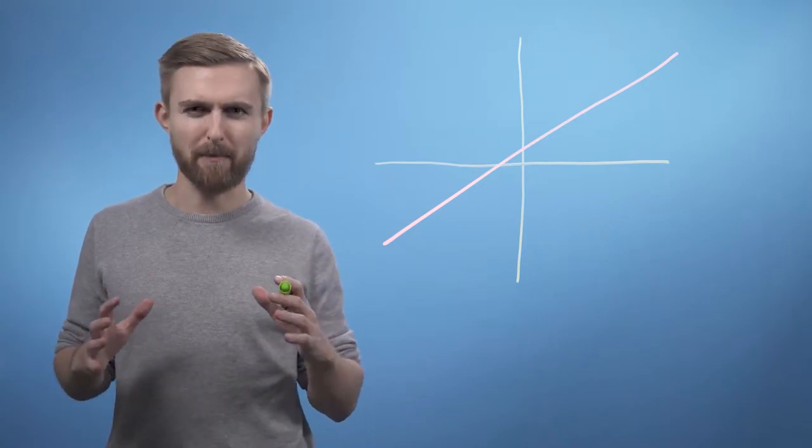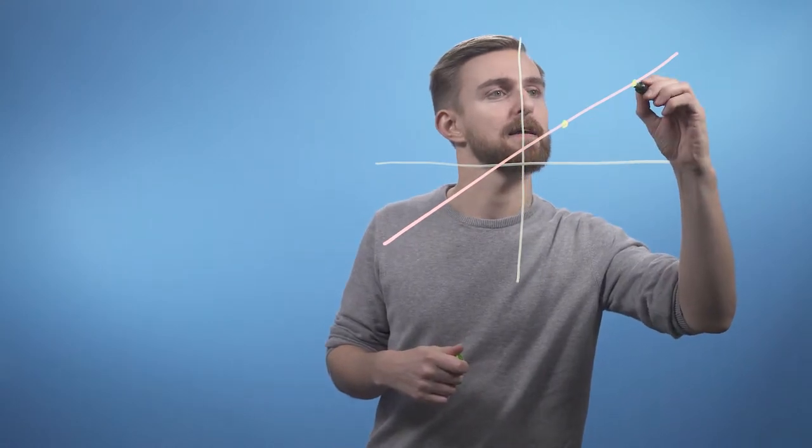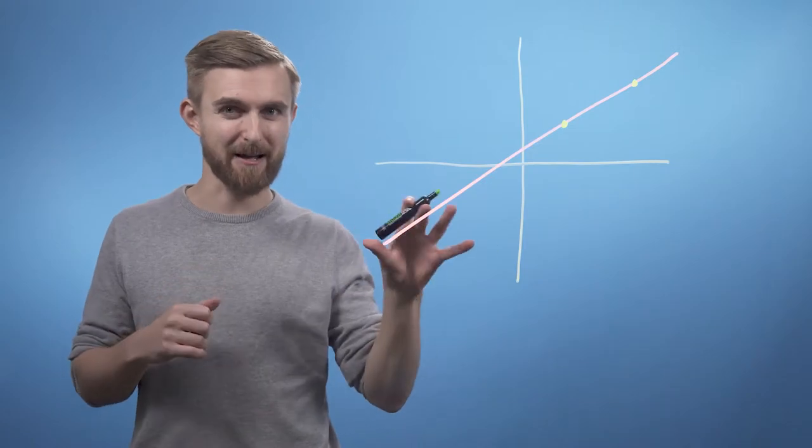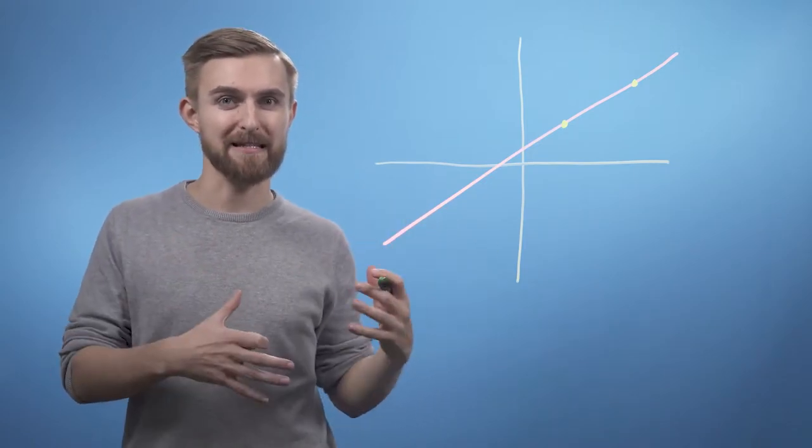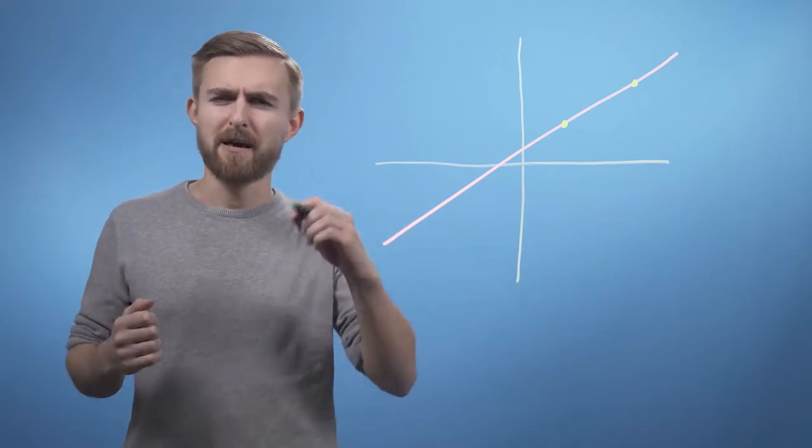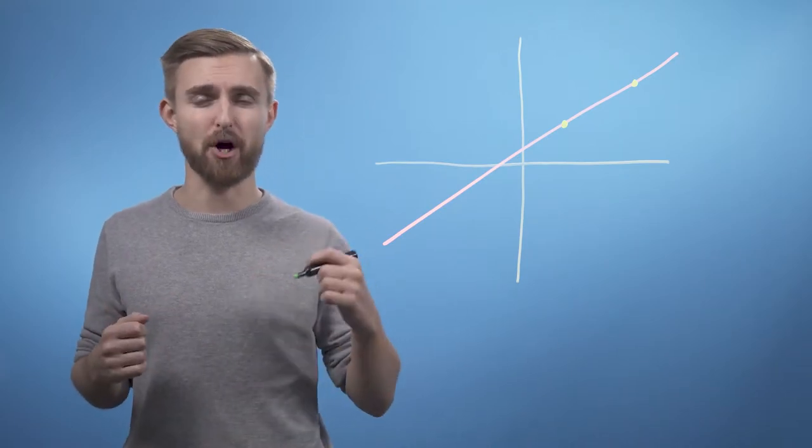So if we start by picking any two points, let's say here and here, we can then say that the gradient of this line is equal to the amount that the function increases in this interval divided by the length of the interval that we're considering. This description is often just condensed to the expression rise over run.